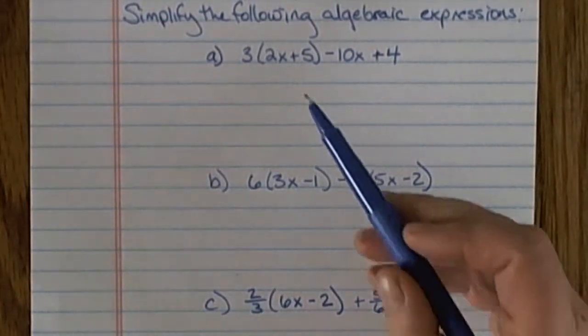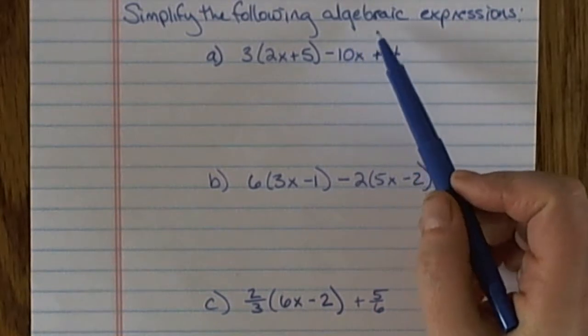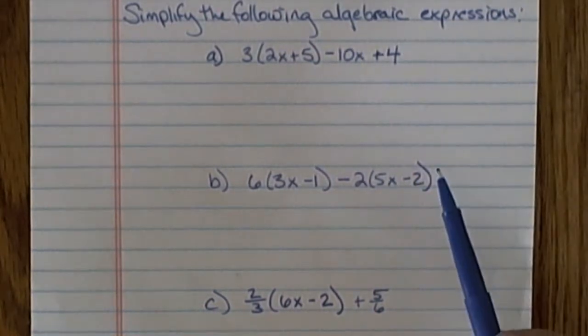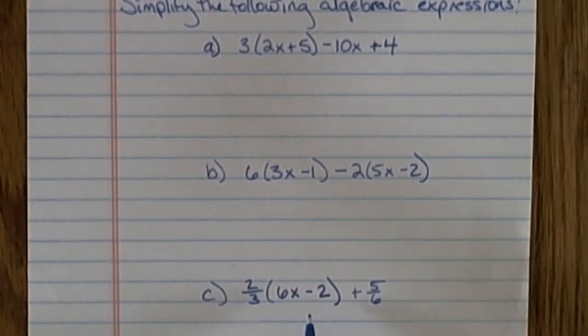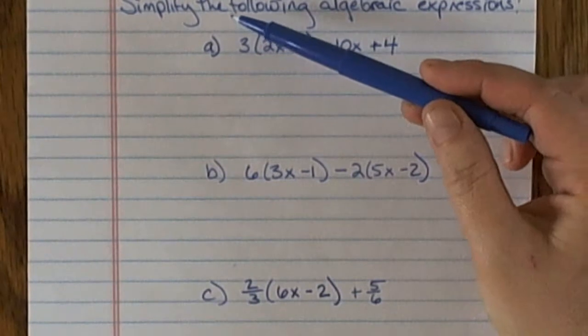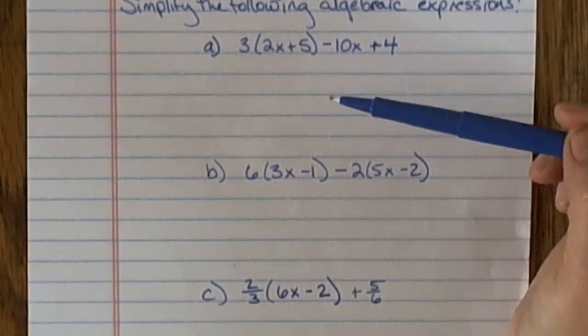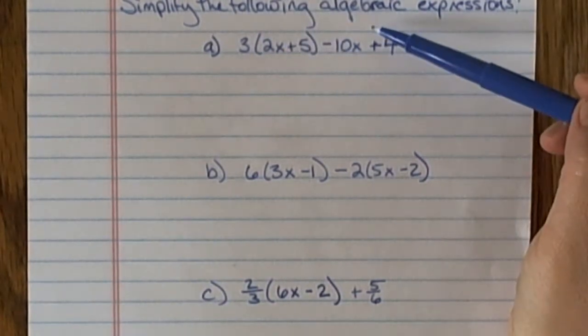In these examples, we're asked to simplify the following algebraic expressions. I can tell these are algebraic expressions and not equations because there's no equal sign. That means my goal is to make them simpler, but I won't be able to solve and get a particular value for x.